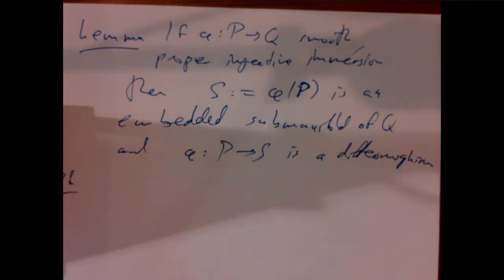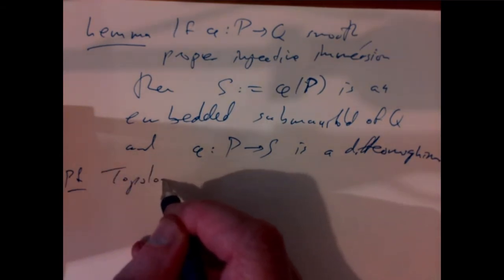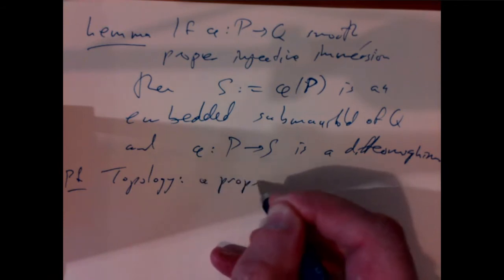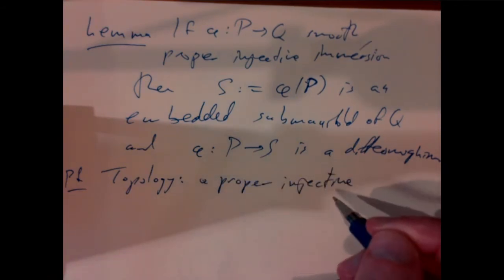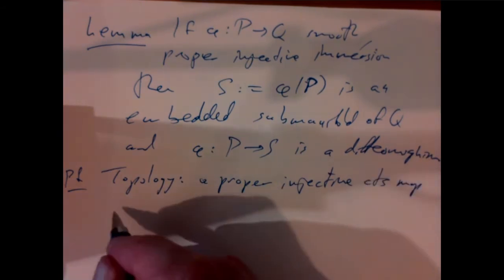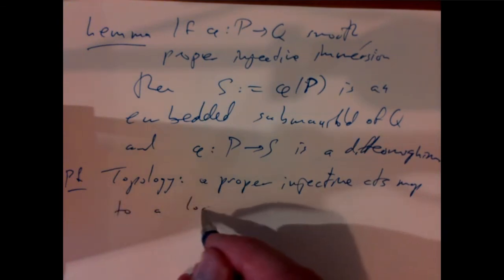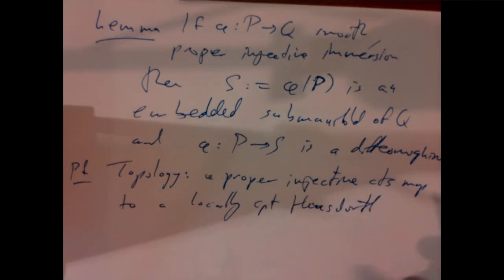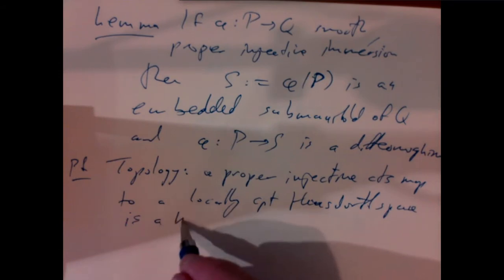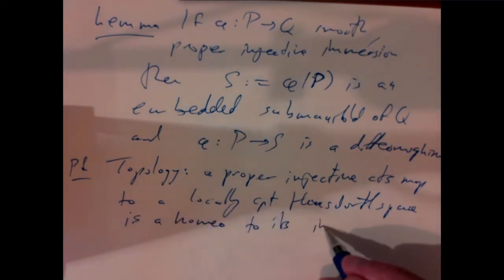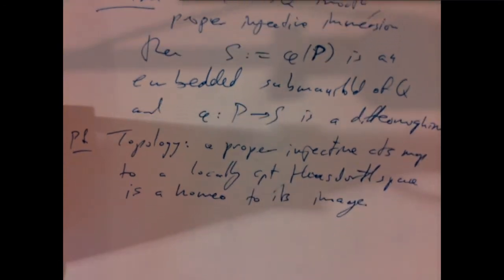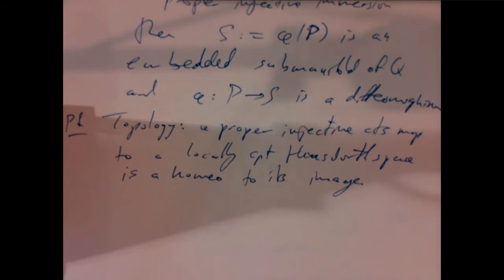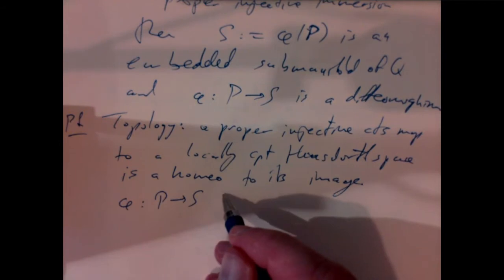The proof involves a little bit of topology. A proper injective continuous map from a topological space to a locally compact Hausdorff space — and manifolds are included in that — is a homeomorphism to its image. Therefore, this map φ from P to S is a homeomorphism.